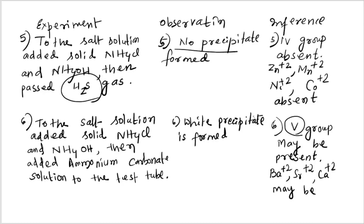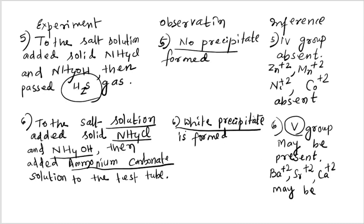We proceed to group five. The possible group five radicals are Ba²⁺, Sr²⁺, and Ca²⁺. The reagent added is ammonium chloride, ammonium hydroxide, and ammonium carbonate solution. A white precipitate is formed — group five is present! So Ba²⁺, Sr²⁺, or Ca²⁺ may be present.